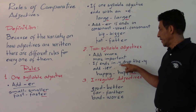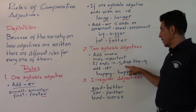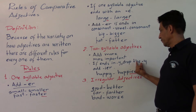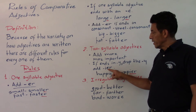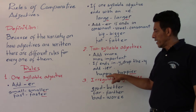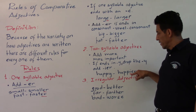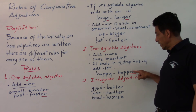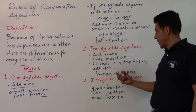If a two syllable adjective ends in Y, we drop the Y and add -IER. For example: happy — we drop the Y and add the letters I, E, R — so happy becomes happier.